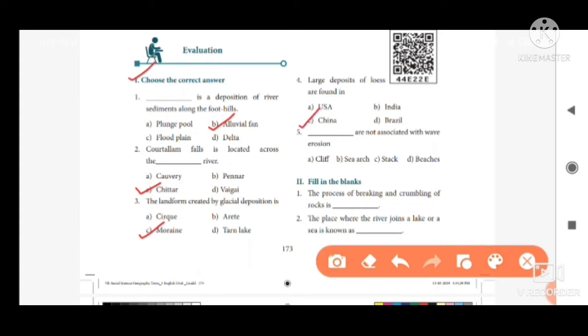Then fifth one, dash are not associated with wave erosion. Option A, cliff, option B, sea arch, option C, stack, option D, beaches. The answer is option D, beaches.